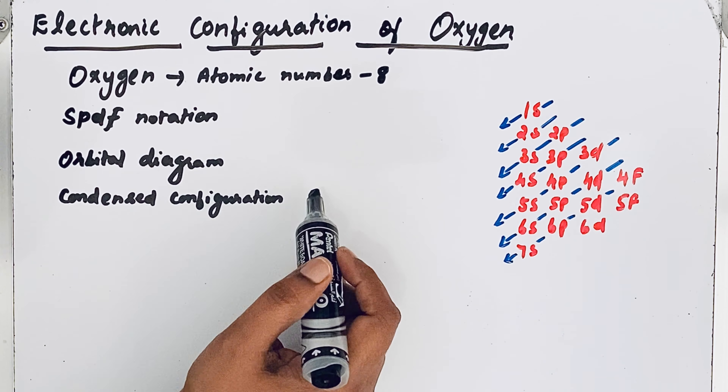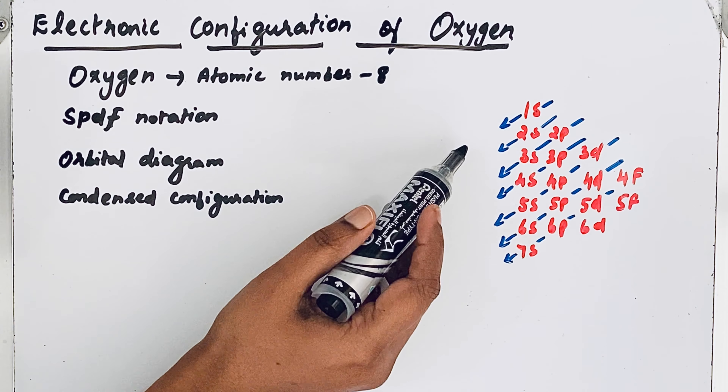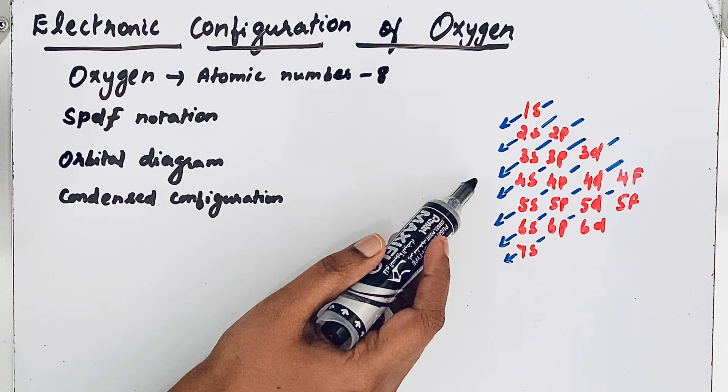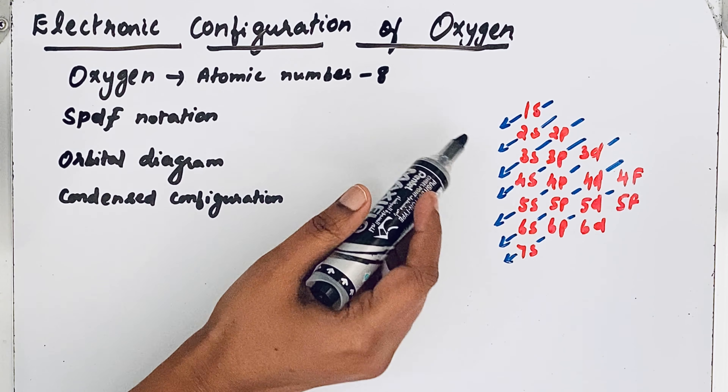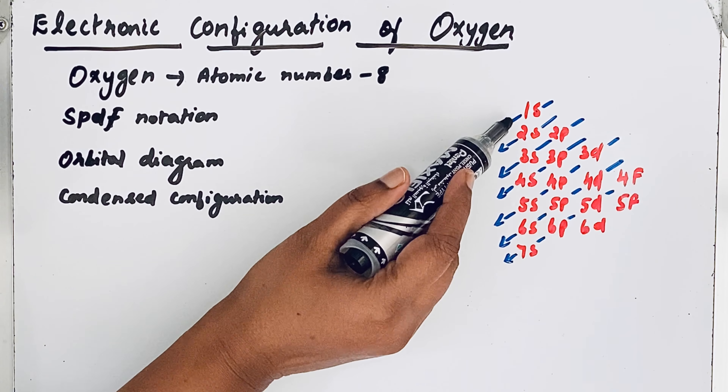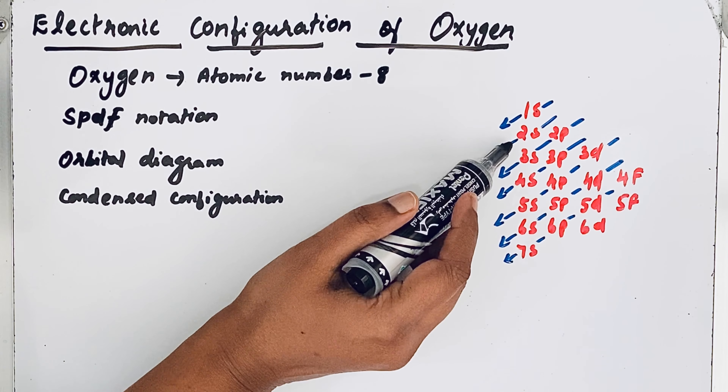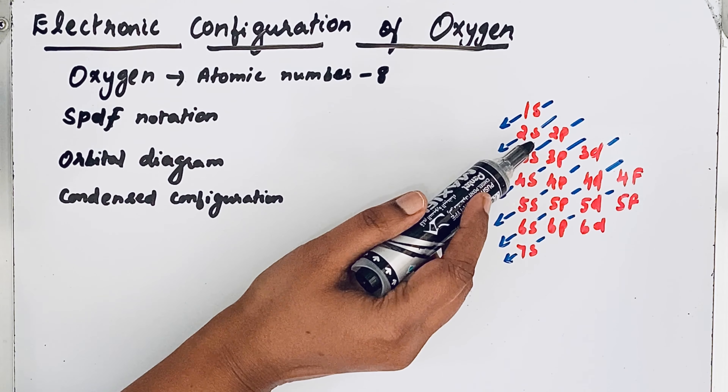To write in any form, we should first know the order of filling of electrons in different orbitals. Electrons fill lower energy orbitals before filling higher energy orbitals. That means after filling the 1s orbital, we move to the 2s orbital, and then the 2p orbitals.